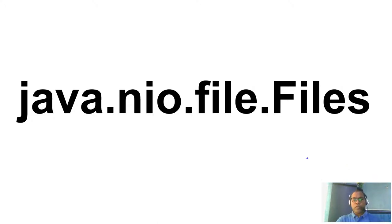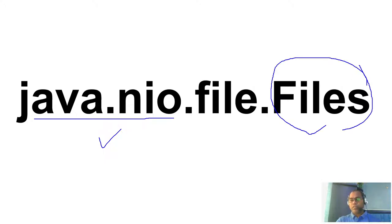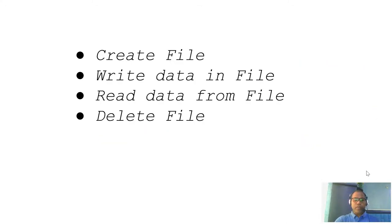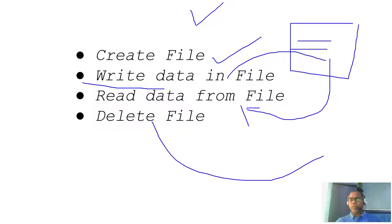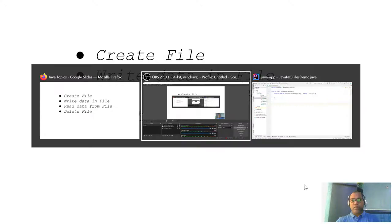Today I am going to discuss the java.nio package, which has a class known as Files. This helps us with lots of operations we generally need with a file system — we can create files, create a directory, write data to a file, read data from a file, and even delete data from a file. Let's look at how this java.nio package helps us perform file read, write, create, and delete operations.